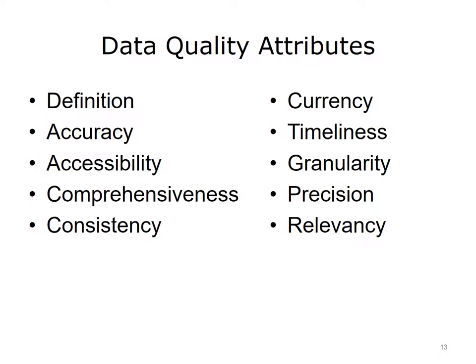Data quality is a complex topic, and it is affected by more than just the accuracy of data. A review of the literature yields a number of terms that can be used to describe data quality attributes. The DQM model attributes include definition, accuracy, accessibility, comprehensiveness, consistency, currency, timeliness, granularity, precision, and relevancy. Each of these attributes will be described and an example will be provided, as well as key process issues that HIT professionals should consider for effective health information exchange.